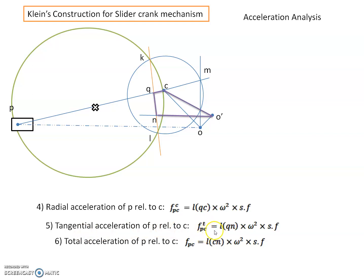QC represents the centripetal component and QN represents the tangential component. The resultant total acceleration of P relative to C is given by vector CN, so total acceleration equals the length of vector CN multiplied by omega squared and the scale factor - you can join point C to N to get this resultant. So: tangential component QN, centripetal component QC, and total acceleration component CN.